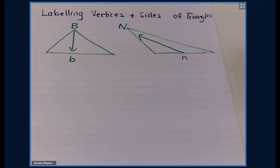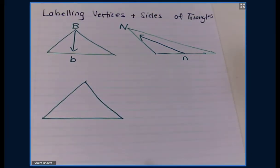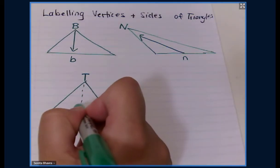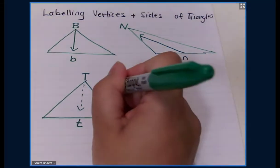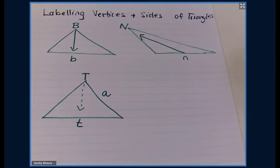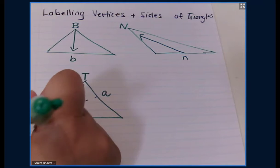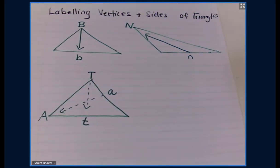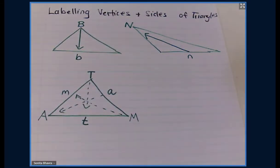Looking at this triangle: if this angle or vertex is labeled with a capital T, then opposite that, this side would be labeled as lowercase t. If this side is labeled as lowercase a, the opposite vertex would be capital A. And if this is angle or vertex M, the side opposite that would be labeled as lowercase m.